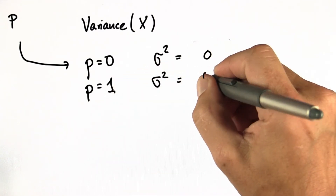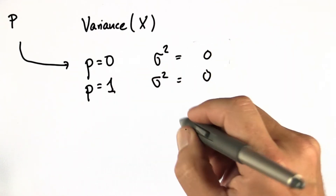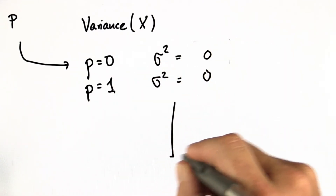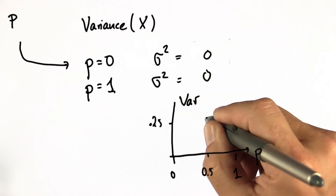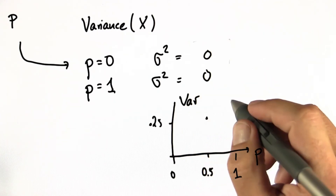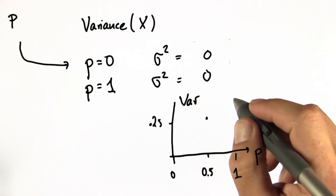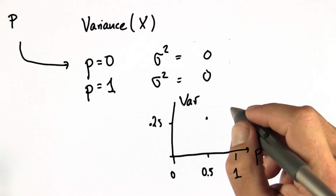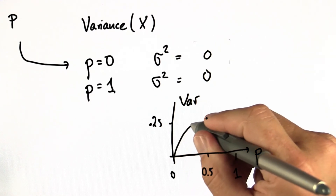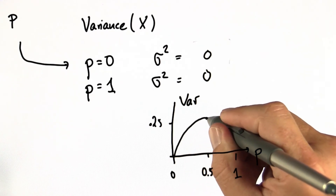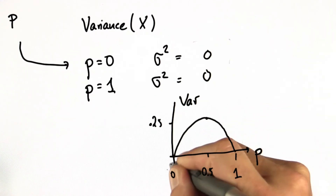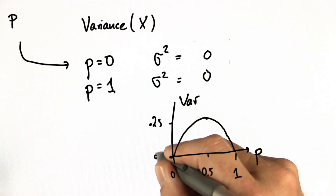So if we were to draw the variance as a function of p, we already know it's 0.25 when the coin is most random, and it goes down in some way all the way to 0.